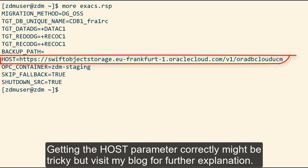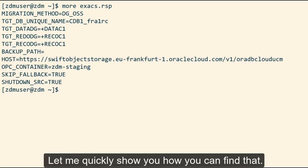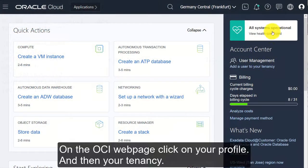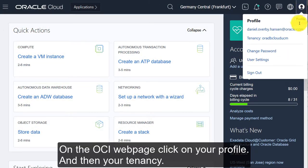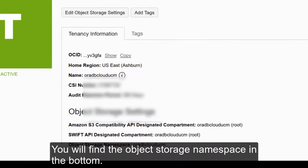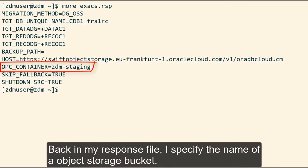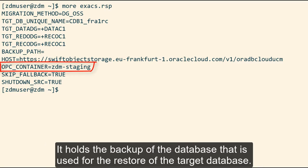Getting the host parameter correctly might be a little tricky, but visit my blog for further explanation. Note that the latter part of the URL is the object storage namespace. Let me quickly show you how you can find that. On the OCI webpage, click on your profile and then your tenancy. You'll find the object storage namespace at the bottom. Back in my response file, I specify the name of an object storage bucket. It holds the backup of the database, which is used later on for the initial restore of the target database.